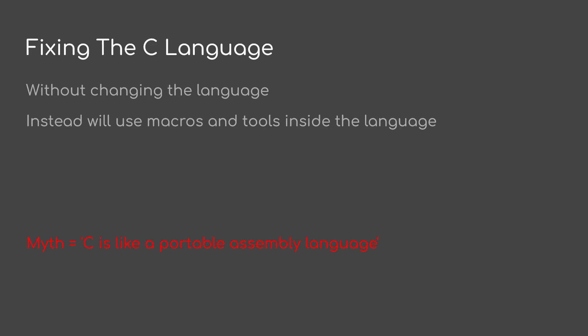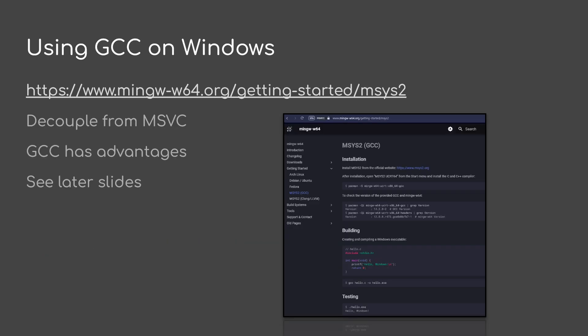Let's fix the C language without changing the language. Instead, we use macros, typedefs, and tools inside the language. Let's also address the myth: C is not a portable assembly language. Prefer to use GCC on Windows. Decouple from MSVC. GCC has a bunch of advantages you'll see in later slides.